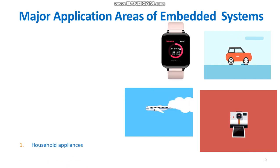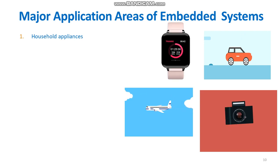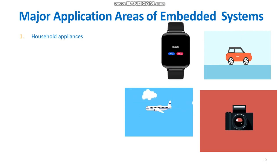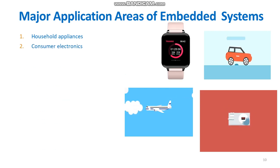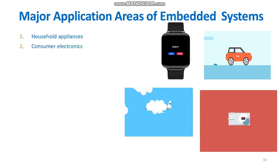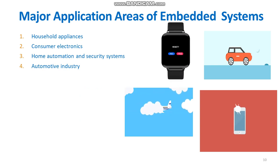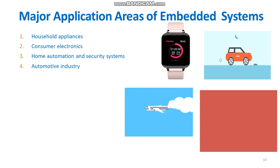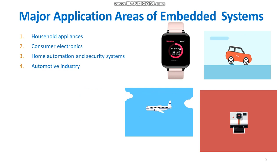The first one: household appliances like television, washing machine, refrigerator, microwave oven, etc. Consumer electronics like cameras. Home automation and security systems like air conditioners, sprinklers, intruder detection alarms, fire alarms, etc.